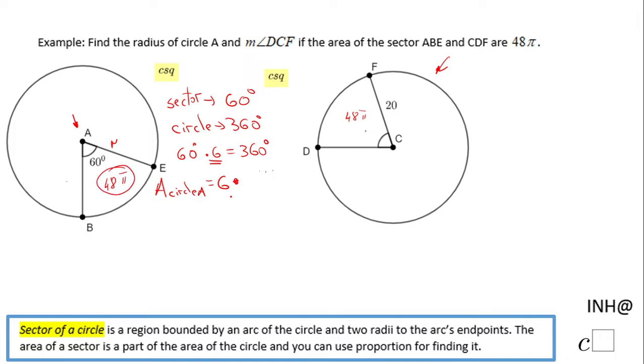The area of circle A will be nothing else than 6 times the area of that sector, which is given to us as 48π. And if we multiply these two, we're going to get 288π.